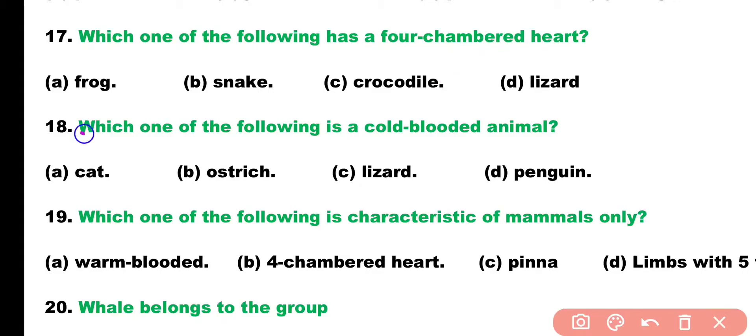Question number 18. Which one of the following is a cold-blooded animal? Cat, Ostrich, Lizard, or Penguin? Correct answer is Option C. Lizard is a cold-blooded or poikilothermic animal, whereas cat, ostrich, and penguin are warm-blooded animals.